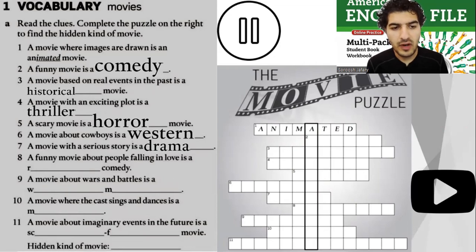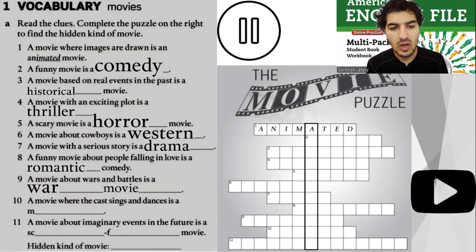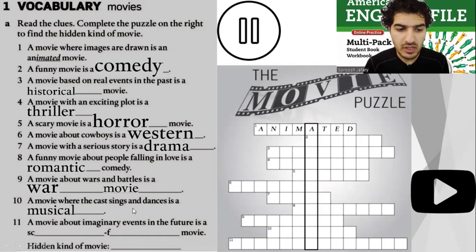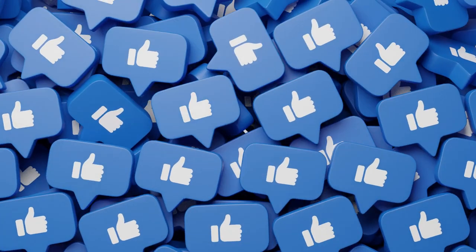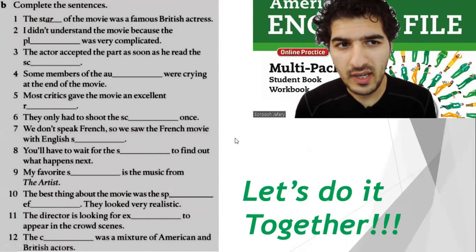Number eight: a funny movie about people falling in love is a romantic comedy. Number nine: a movie about wars and battles is a war movie. Number ten: a movie where the cast sings and dances is a musical. Number eleven: a movie about imaginary events in the future is a science fiction movie. The hidden kind of movie is: action movie. You did great!